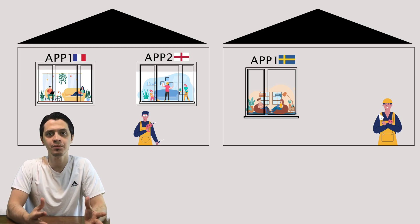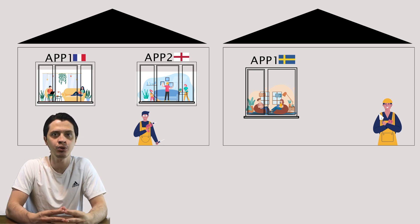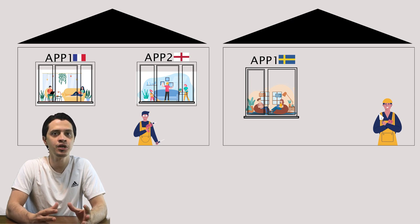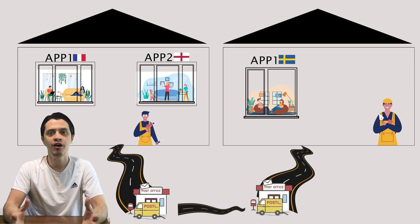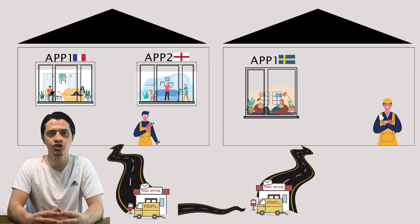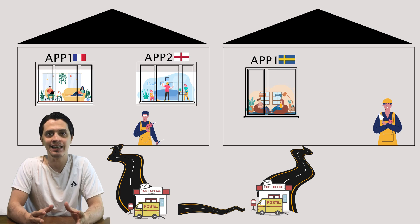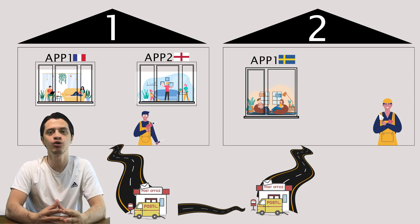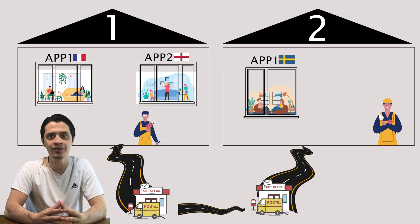Now let's say two apartments from two different buildings far away from each other want to communicate and send packages. They have their own inner protocols and infrastructure that might have some similarities, but now they must agree on some global protocols to be able to communicate and understand each other. There must be some intermediary infrastructure and equipment established to form a network of buildings. The POST system is the no-brainer model. In the POST system that models the network of buildings, each building has a unique postal code that makes the addressing possible.